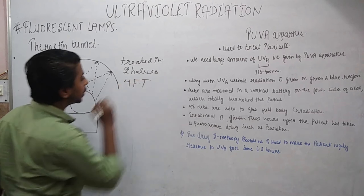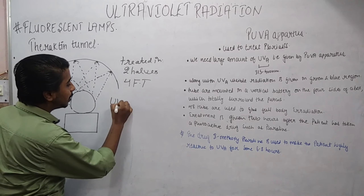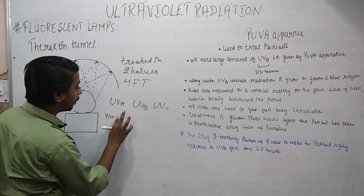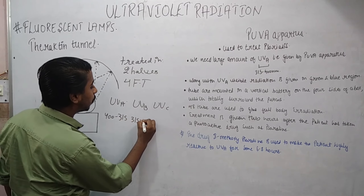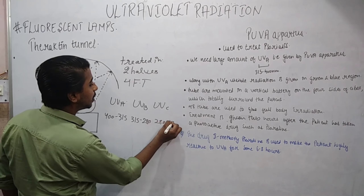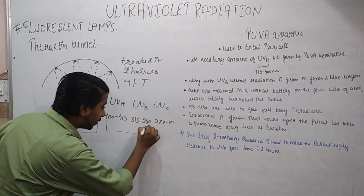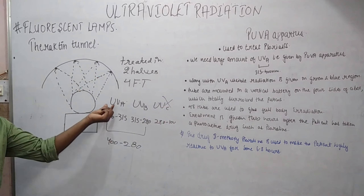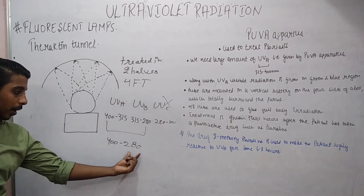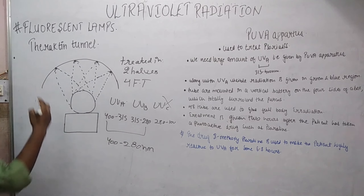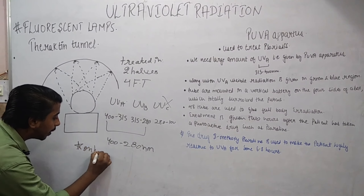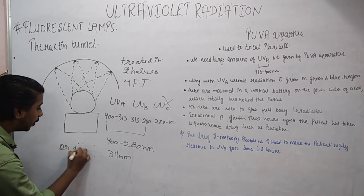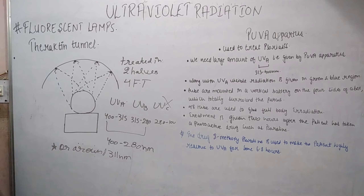There are a total of four fluorescent tubes. As we know, there is UVA (400 to 315 nanometers), UVB (315 to 280 nanometers), and UVC (280 to 100 nanometers). This theractin tunnel can give an output of 400 to 280 nanometers — that is UVA and UVB. There is also another type of theractin tunnel which gives an output of only around 311 nanometers.